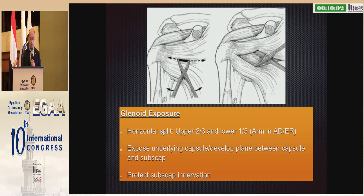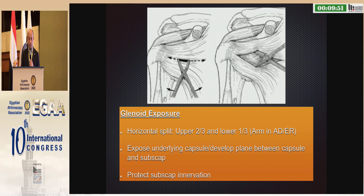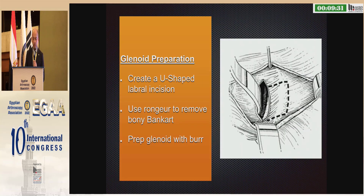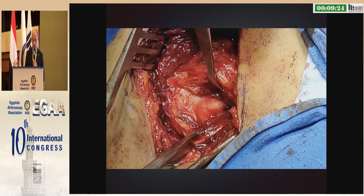After that, we have to expose the glenoid. We perform a horizontal split. In this part of the surgery, you have to take care of the innervation and protect the nerves. We usually use the two-thirds and one-third horizontal split. After the horizontal split, you will see the capsule. You have to create a U-shaped labral incision, use a burr to remove the bony Bankart, and prepare the glenoid with a burr.